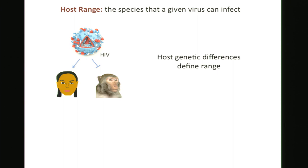Antibodies and other humoral immunity are important to these processes for some viruses. But interestingly, many of the patterns of host range we observe in nature can be recapitulated in cell culture, where those components of the immune system don't exist. This tells us that there are strong cellular components of host range as well.